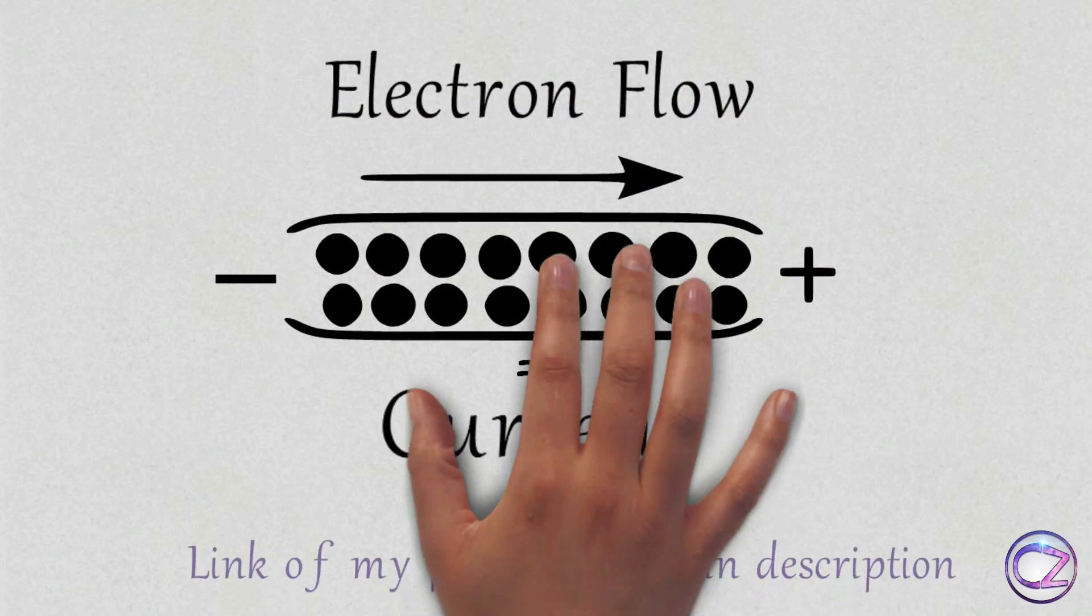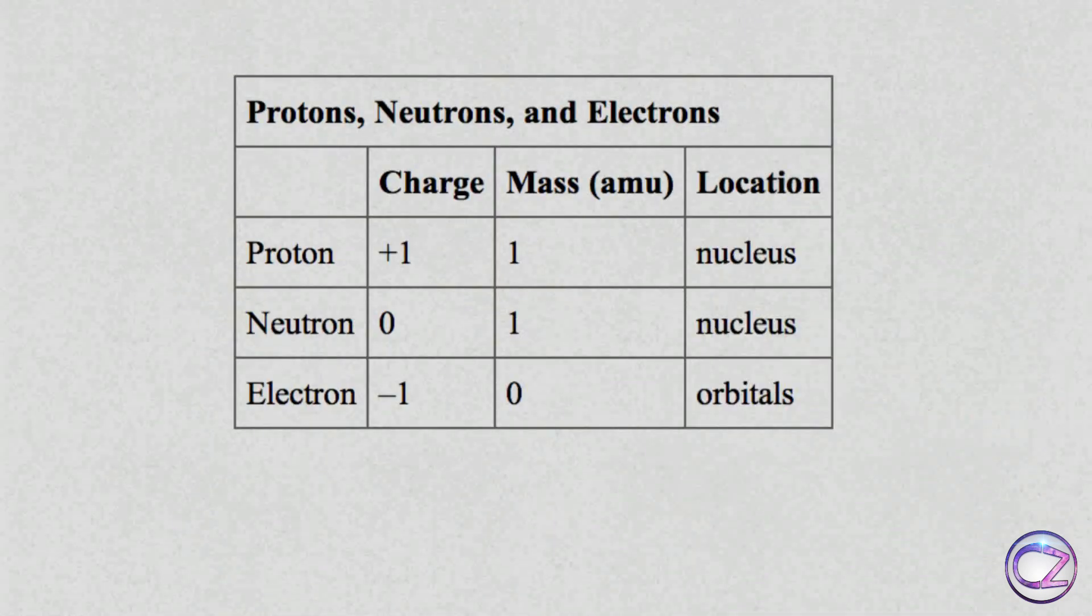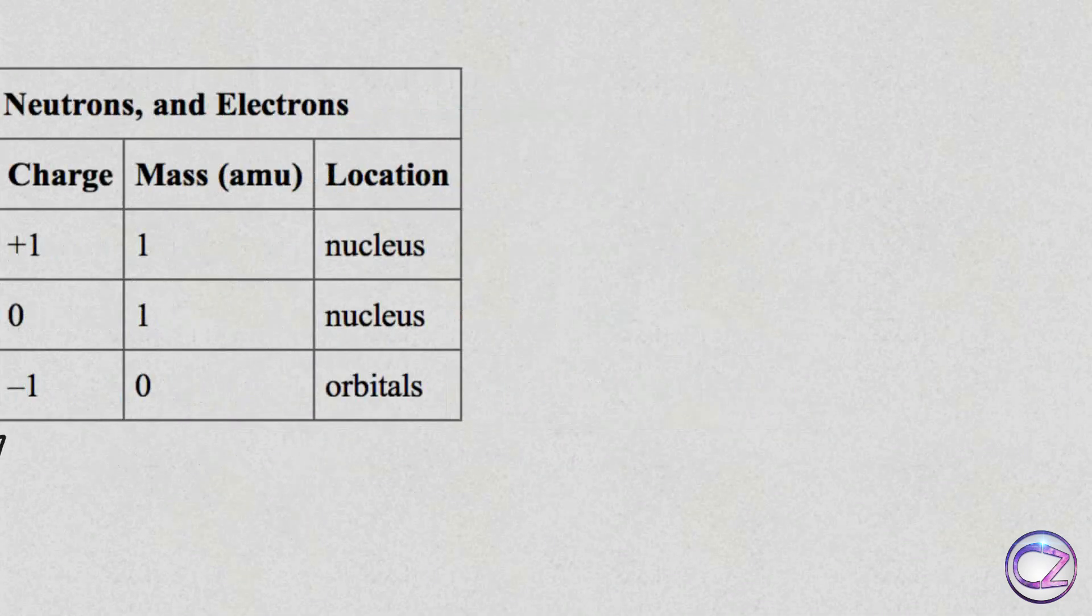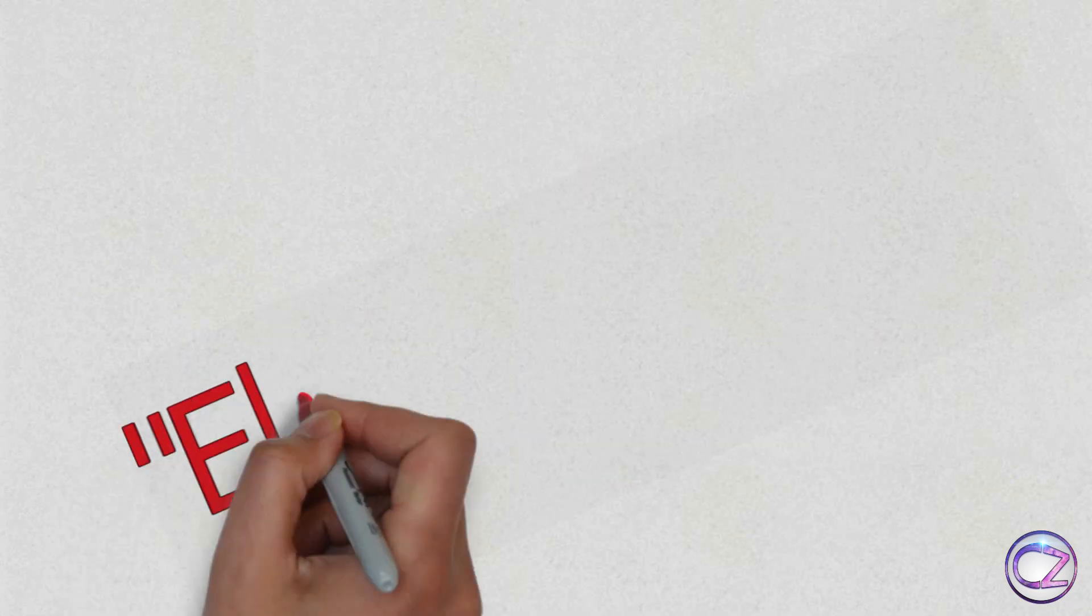In my previous video I told you about current. There I said electrons flow negative to positive. This is physically accurate because we know electrons have negative charge and negative always attracts positive. That's why electrons flow towards positive. In electric circuits this rule is known as electron flow.